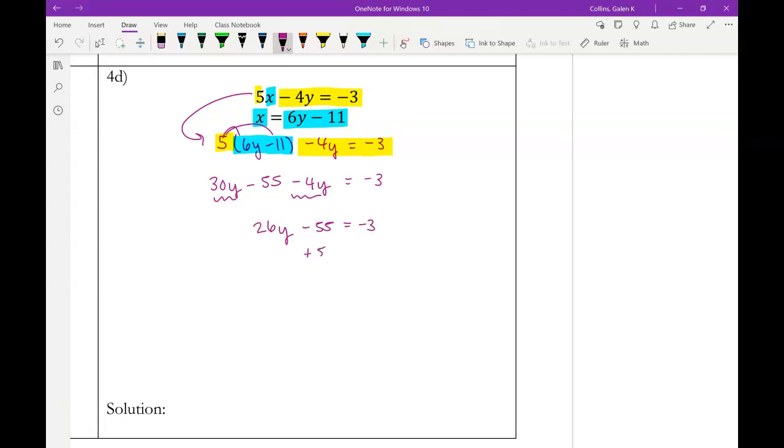All right. So then we could add our 55 to both sides. And negative 3 plus 55 is 52. Oh, wait a minute. I feel like I made a mistake. Did I make a mistake? No, never mind. Okay, 52. All right. And then lastly, we could divide both sides by our coefficient of y, 26. And so when we do that, 52 divided by 26 is 2.